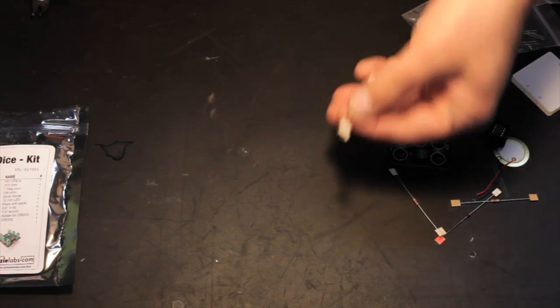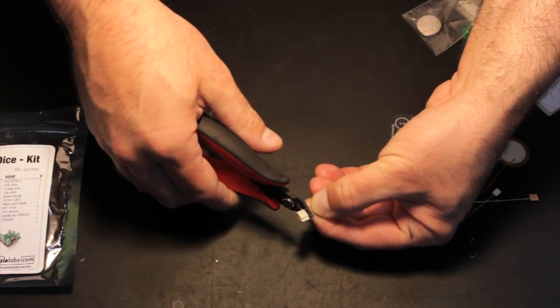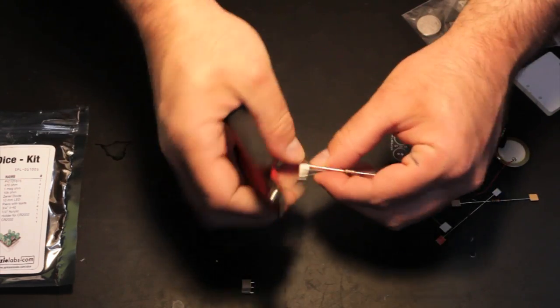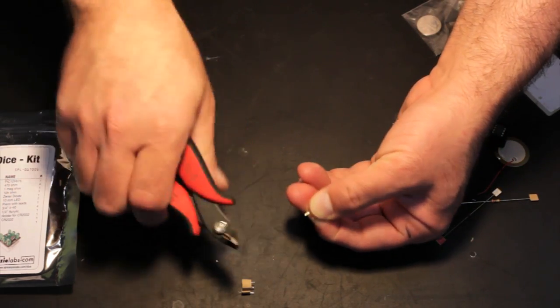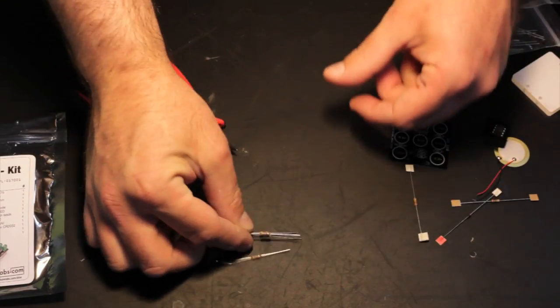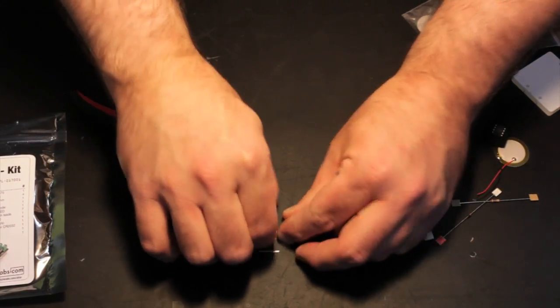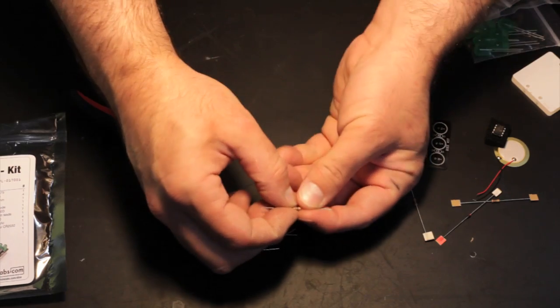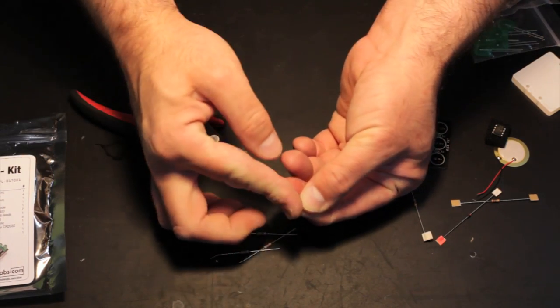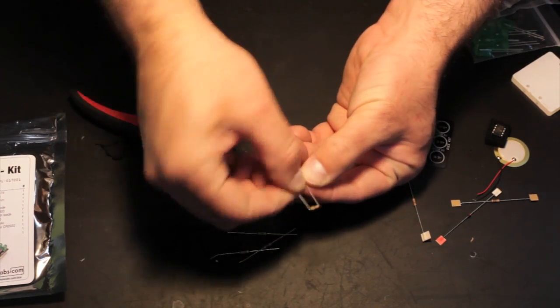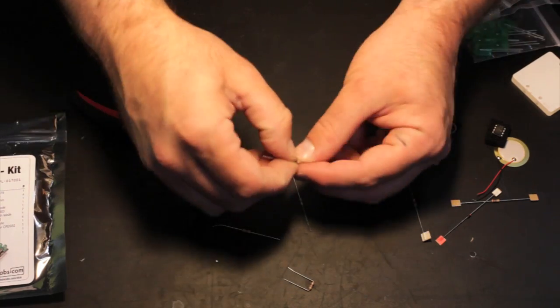The first thing that we're going to do is we're going to start preparing the resistors for installation. Cut the resistors free from their packing tape, starting here with the four 470 ohm resistors. And what you're going to want to do with each one is take it, bend the leg at a right angle to the body so that it looks just like this. Do that for all four resistors.